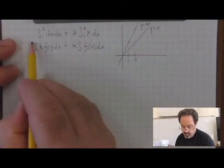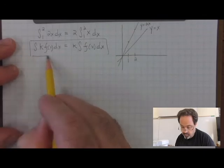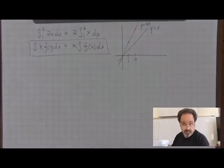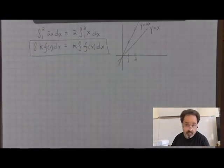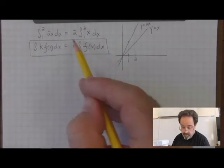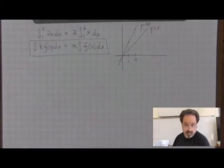This general property of integration will work for any function or a constant times any function and can be very useful when integrating the function becomes difficult. We simplify by bringing a constant out before attempting to integrate.